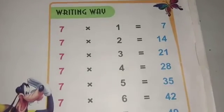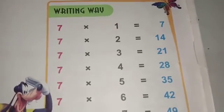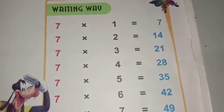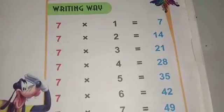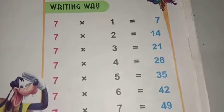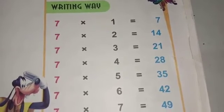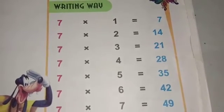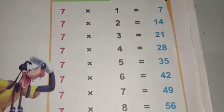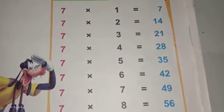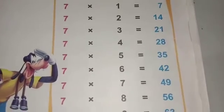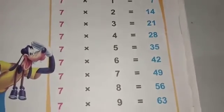7 1s are 7, 7 2s are 14, 7 3s are 21, 7 4s are 28, 7 5s are 35, 7 6s are 42, 7 7s are 49.